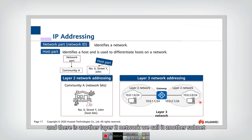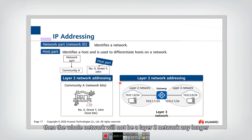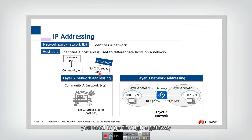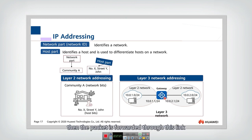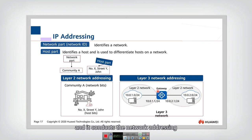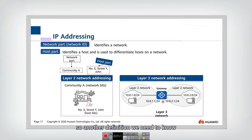If there is another layer two network forming another subnet, and we have a router connecting them, then the whole network is a layer three network. In a layer three network, you cannot simply use the host part to find a host - you need to go through a gateway. The gateway checks the destination IP address, finds the correct outgoing link, and forwards the packet through that link. The gateway performs network addressing and forwards packets to the correct link.